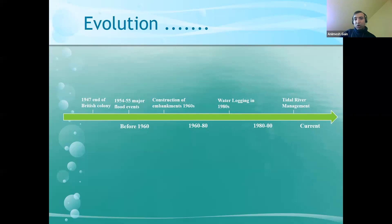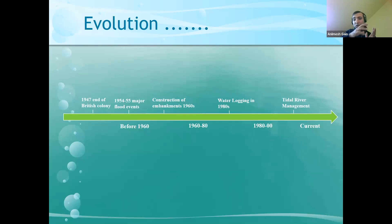By the 1980s, the whole floodplain area became waterlogged and permanent flooding occurred because of the embankment construction. You can see how the consequences stemmed from the supply-side approach — focusing only on the narrow supply-side process without considering broader societal aspects.